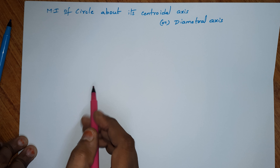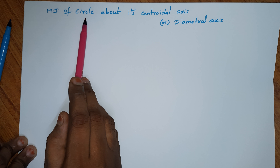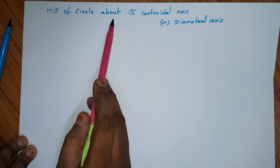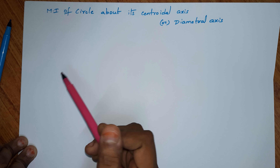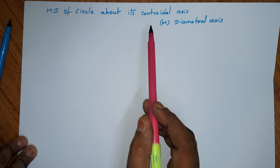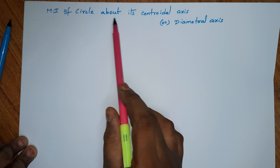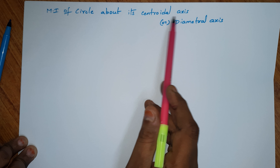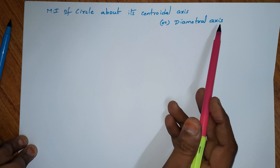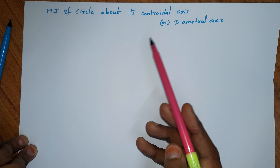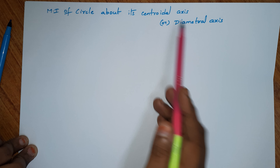Hello everyone! In this video, we will try to derive the moment of inertia of a circle about its central axis. Sometimes in the exam, it is referred to as the moment of inertia about its central axis or diametral axis, because the diameter itself acts as the central axis.